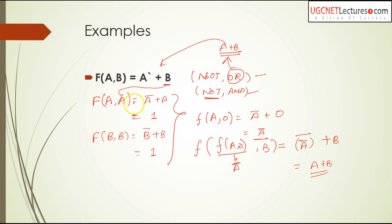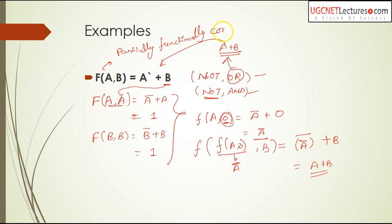The problem is I cannot derive the complement operation from this function using only variables — I need the help of the constant 0. If I need the support of a constant like 0 or 1 to derive the operations, then this function is partially functionally complete, not fully functionally complete.